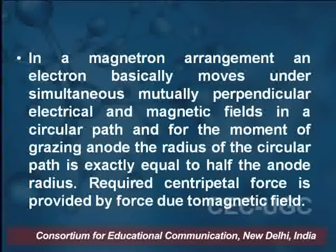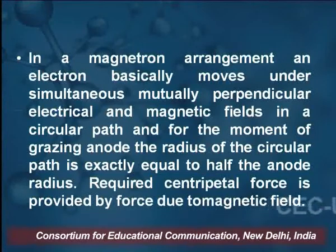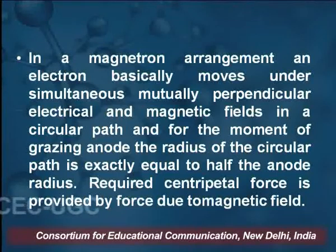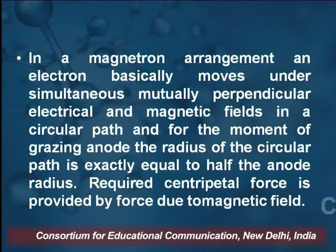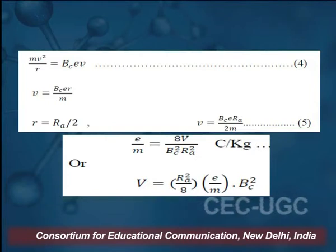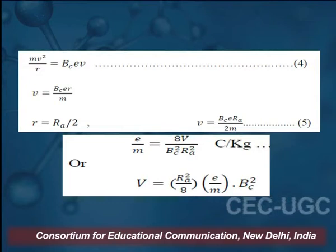In the magnetron arrangement, the electron basically moves under simultaneously mutually perpendicular electric and magnetic fields. A circular path is formed, and the anode generates an electron beam coming from the cathode. The radius of the circular path is exactly equal to half the radius of the anode. The required centripetal force is provided by the magnetic force, so we write mv²/R = BceV.